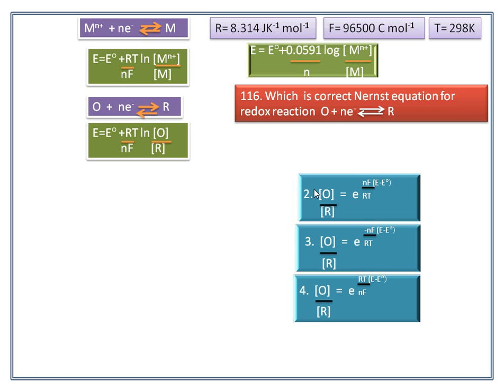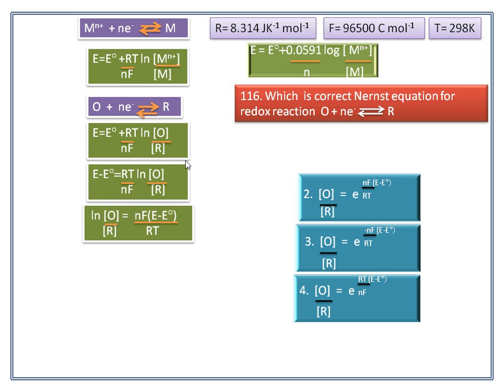Other options, that is second, third and fourth options, having different form of Nernst equation. So we bring this equation into this form. For that we need some rearrangement.